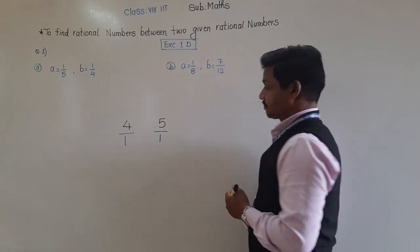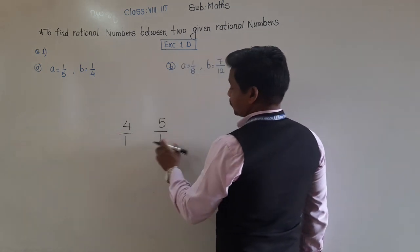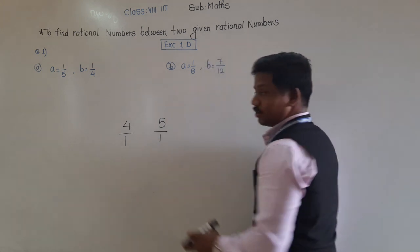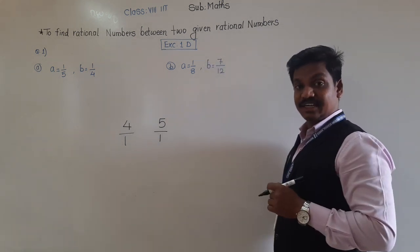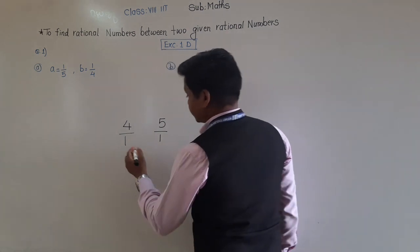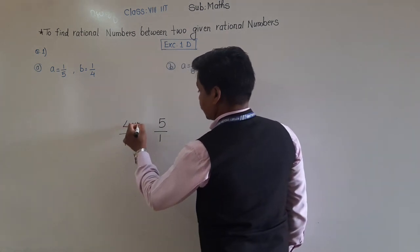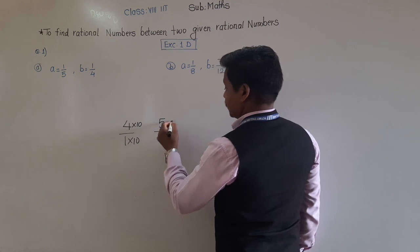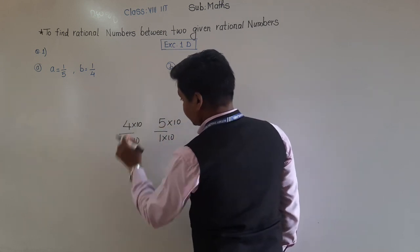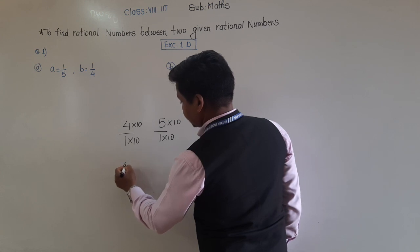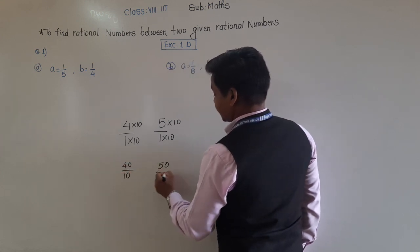How can we find them? Since 4/1 and 5/1 have the same denominator, we find equivalent rational numbers. If we multiply both by 10, we get 40/10 and 50/10.